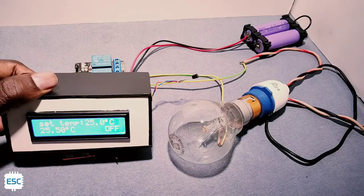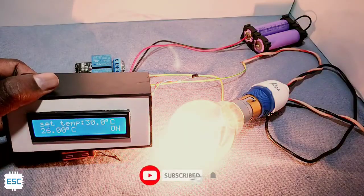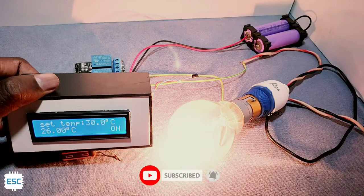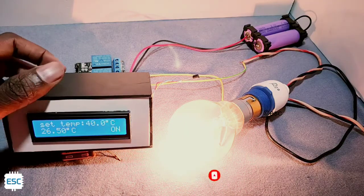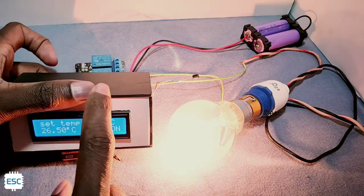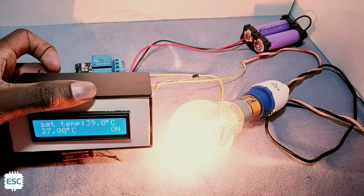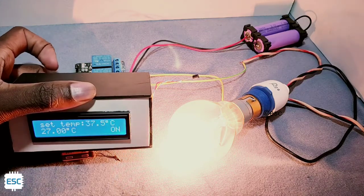So this is the final test. I set the temperature to 37.5 degrees Celsius and that's the optimum temperature for chicken eggs. So I am planning to use the bulb as heating element so the temperature is increasing.